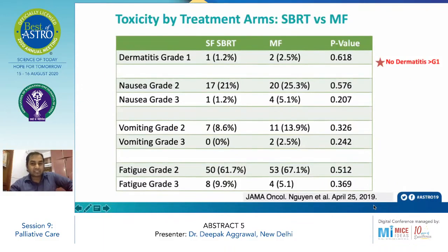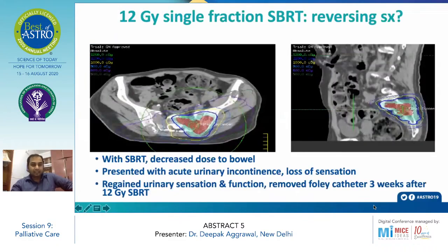Assessing toxicity between SBRT and multi-fraction, diarrhea was limited to grade 1. Nausea and vomiting were mostly grade 2, with very few grade 3 events. Notably, one patient treated with SBRT had a gratifying result: the patient presented with acute urinary retention and loss of sensation, and after receiving 12 Gy single fraction SBRT, urinary sensation and function were regained, and urinary catheters were removed after 3 weeks.